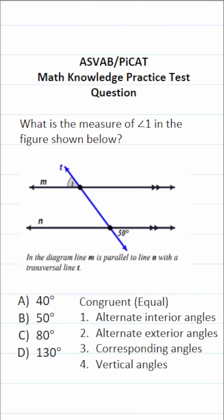This math knowledge practice test question for the ASVAB asks: what is the measure of angle one in the figures shown below? In our figure, we have a transversal that intersects two parallel lines, and for the ASVAB you have to know this.